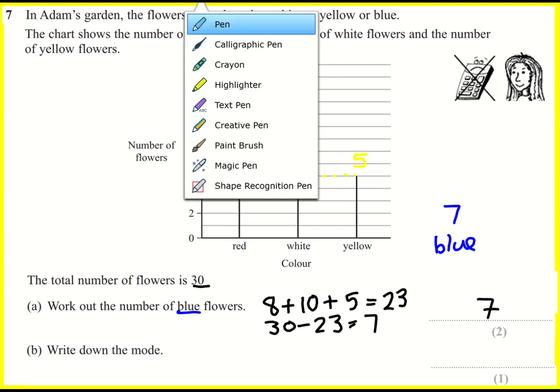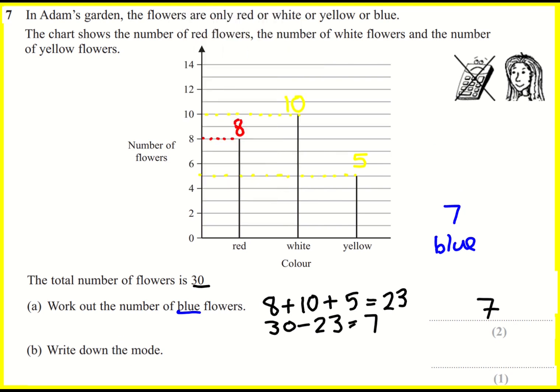And part b says work out the mode. Okay, the mode is the value that, well, the category for which you see the highest frequency. In other words, the highest number. So the highest number here is for whites. So the highest number, in other words the highest frequency, falls under whites. So the mode is white flowers.